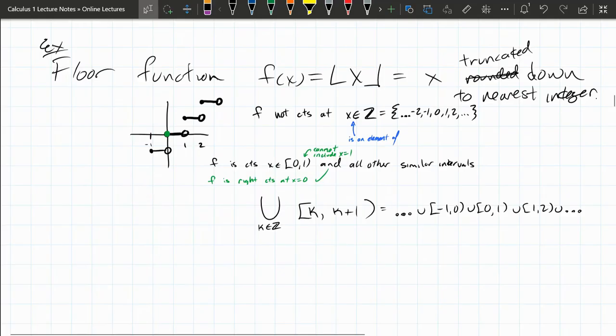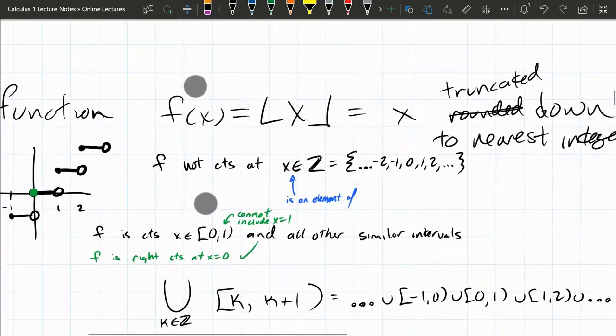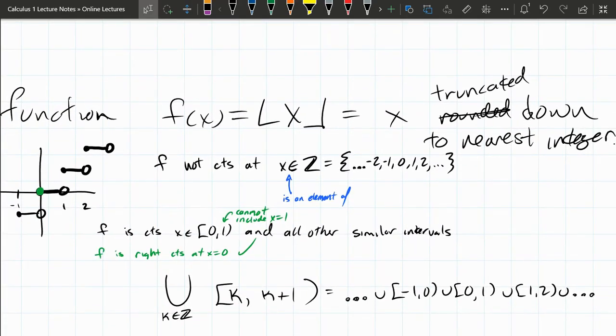So this example here, we have what's called the floor function. Now, the way you write it, it looks almost like you did square brackets, except there's no top on them. And what this is, your input's x, your output is always going to be a whole number, an integer.